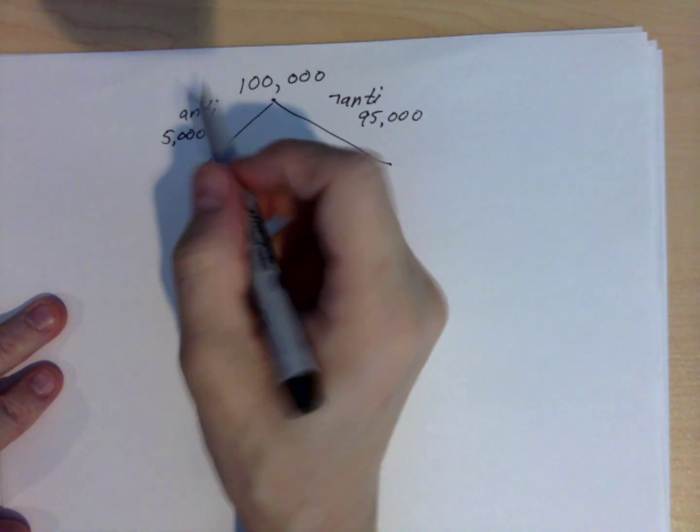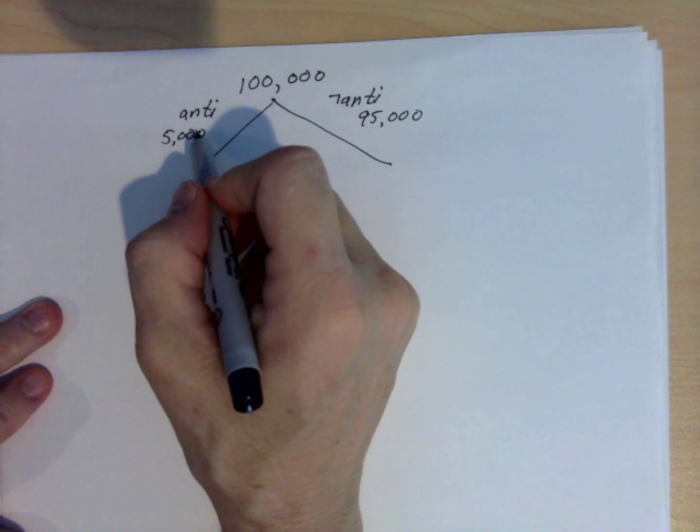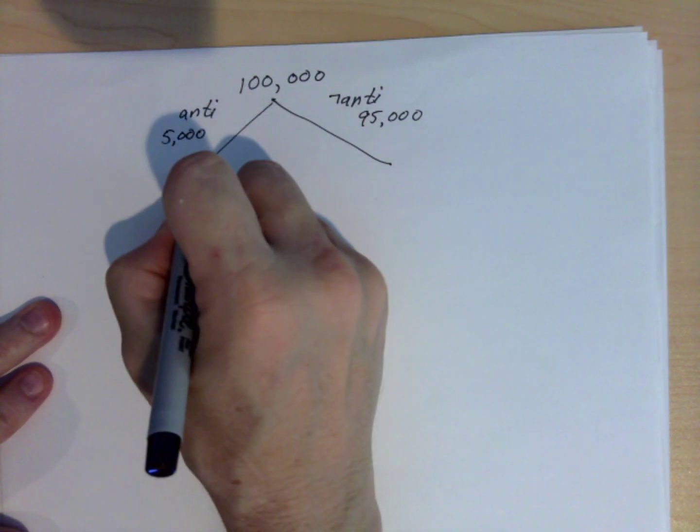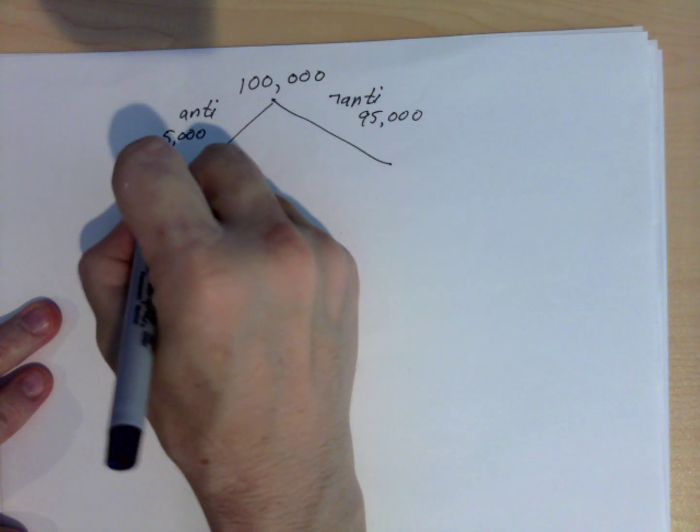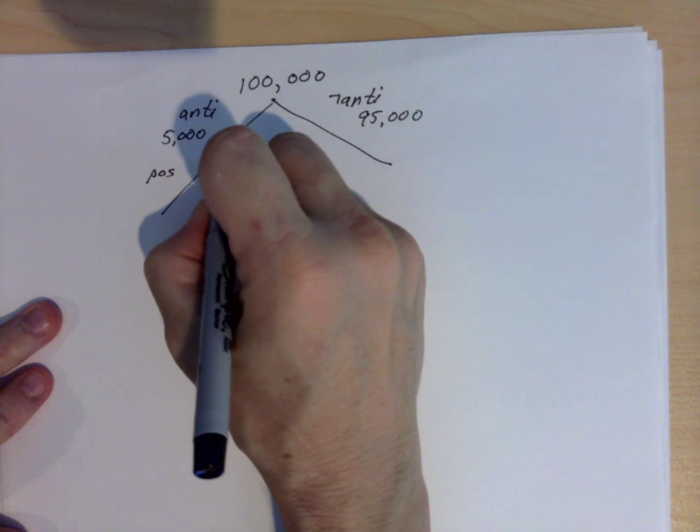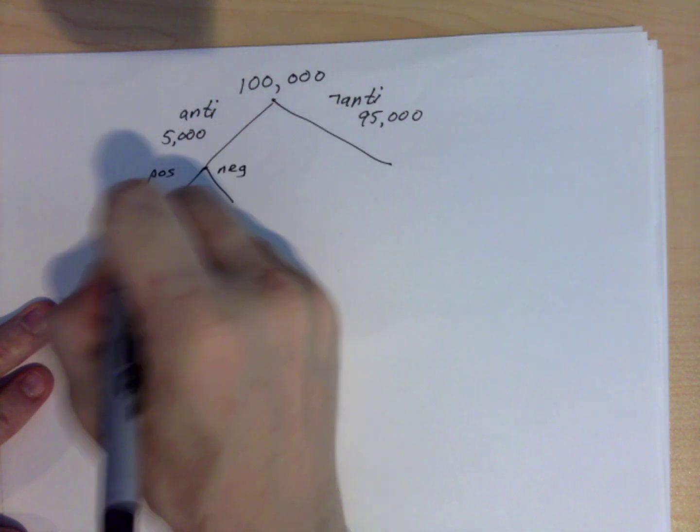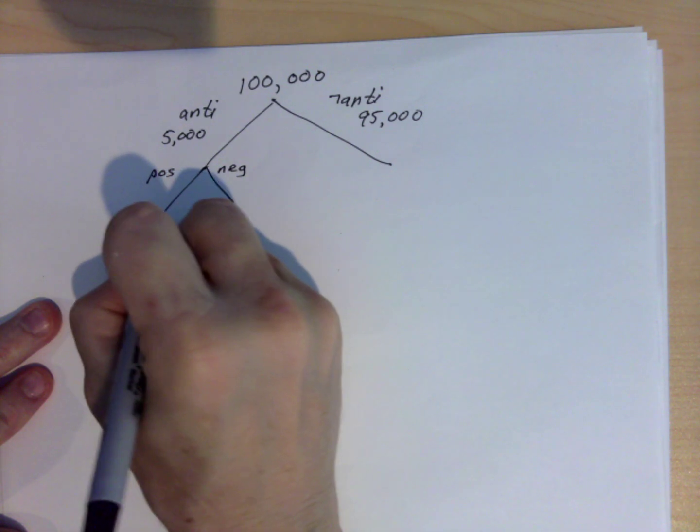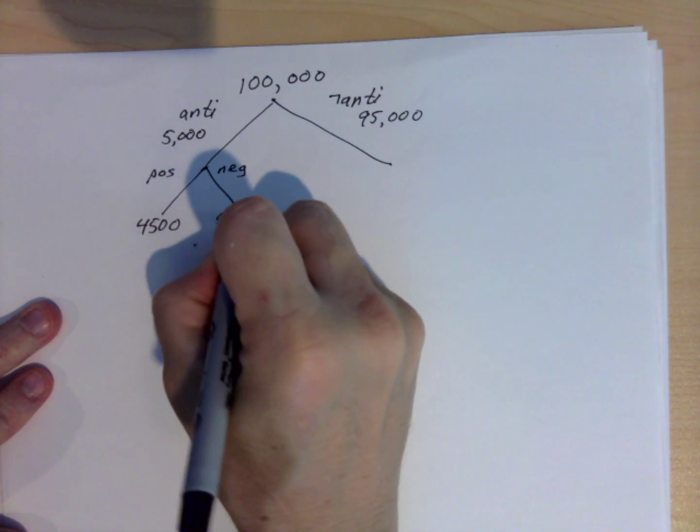And we said that of the 5,000 people that have antibodies, 90% will test positive and 10% will test negative. So that works out to be 4,500 people here and 500 people here.